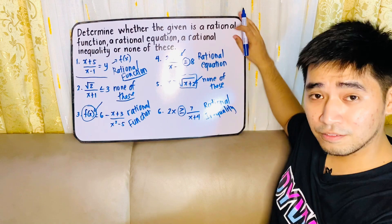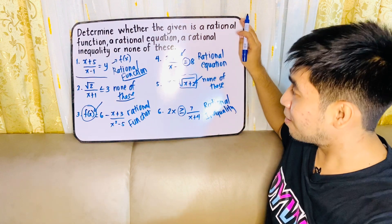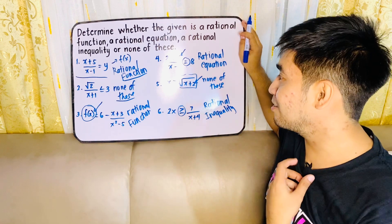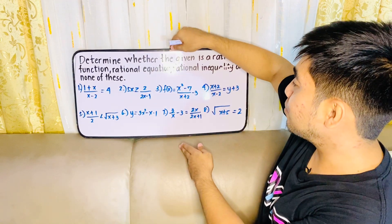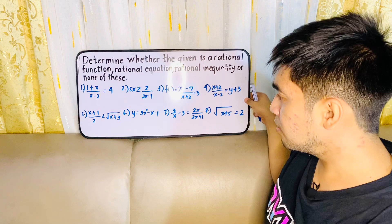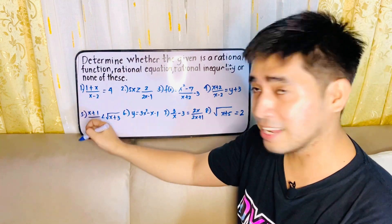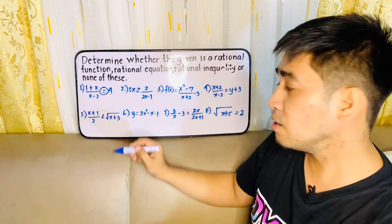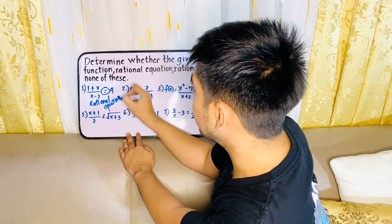So this is how we solve for different given expressions and determine if they are a rational function, a rational equation, a rational inequality, or none of the given. Let's have another activity. Again, we need to determine whether it is a rational function, rational equation, rational inequality, or none of these. For number 1, that is 1 plus x all over x minus 2 is equal to 4. Meron bang ibang variable? Wala — si x lang. Ano lang yung ginamit nating symbol? Equal. Therefore, this is a rational equation.